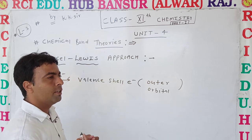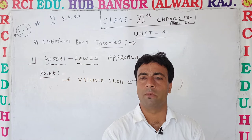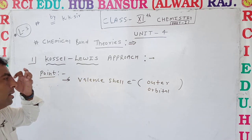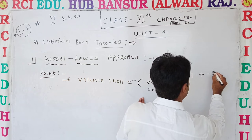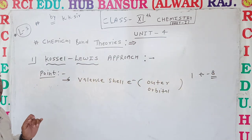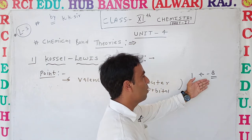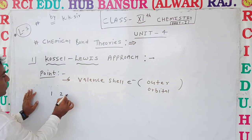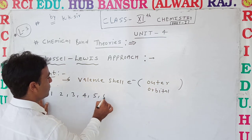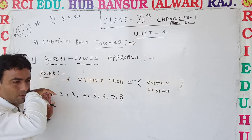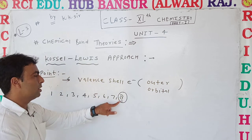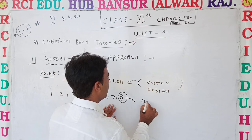Valence shell electrons participate in chemical bond formation. Chemical bond formation depends on valence shell electrons, which may be 1 to 8 in number. In organic compounds, elements have 1 to 8 electrons present. Every element wants to complete its maximum number of 8 electrons — this is the basis of the octet concept.